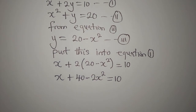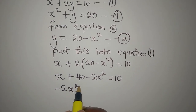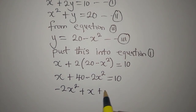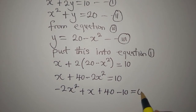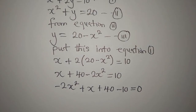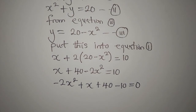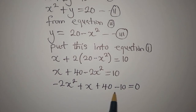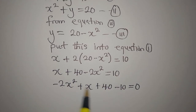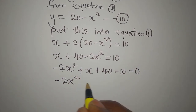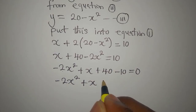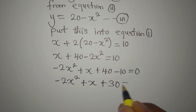If we open the bracket, we write minus 2x squared plus x plus 40. If we bring the 10 to the other side, it becomes minus 10 and everything is equal to 0, meaning there's nothing on the right-hand side anymore. So we have minus 2x squared plus x plus 30 is equal to 0.